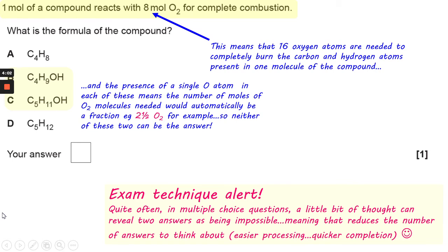This brings in an exam technique idea. Quite often in multiple choice questions, a bit of thinking can often reveal two wrong answers, meaning that the remaining answers are all that you really need to think about. This speeds things up and makes it easier to process.